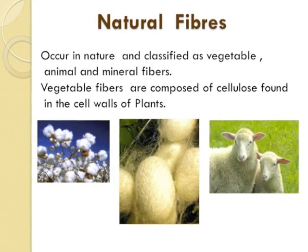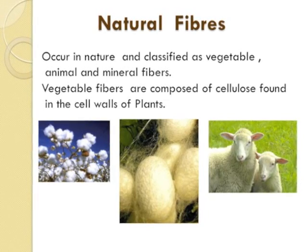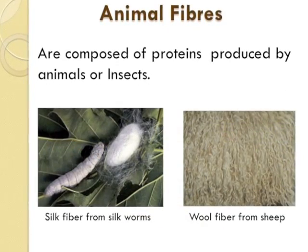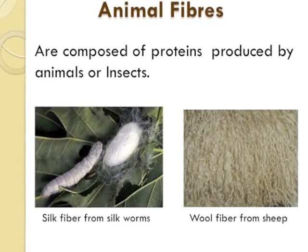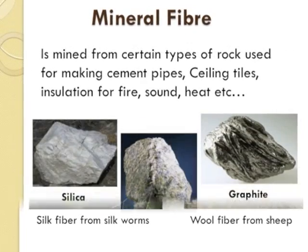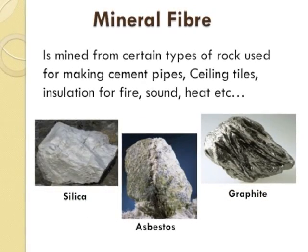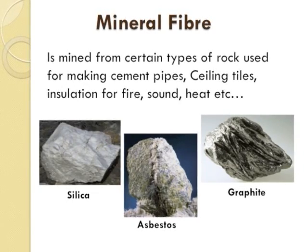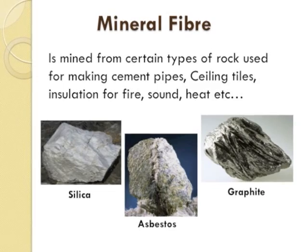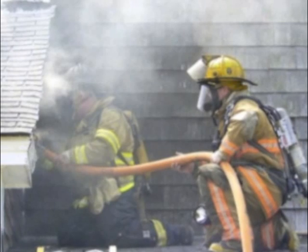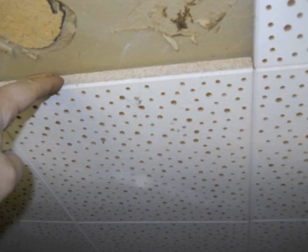Vegetable fibers are composed of cellulose found in cell walls of plants. Animal fibers are composed of proteins produced by animals or insects. Mineral fibers are mined from certain types of rock and are used for making cement pipes, ceiling tiles, and insulation — for instance, to insulate a room so that the heat does not come in and we can have air conditioning.